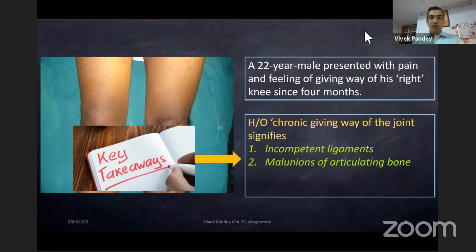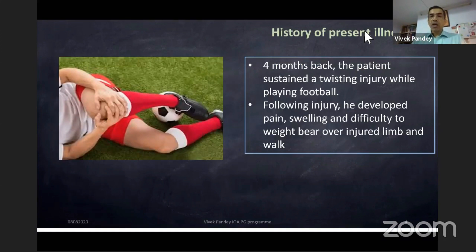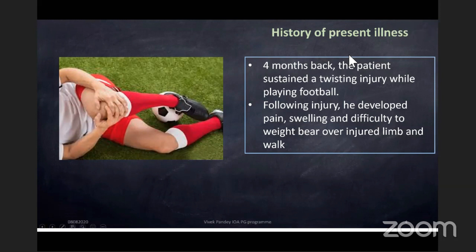Or there may be a malunion of an articulating bone — a tibial plateau not perfectly shaped so the femoral condyle cannot exactly articulate, making the patient feel unstable. There could also be muscle-tendon insufficiency or neurological weakness. History of present illness: four months back, the patient had a twisting injury while playing football.